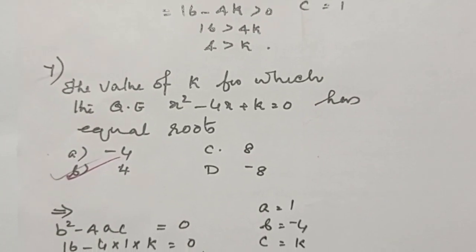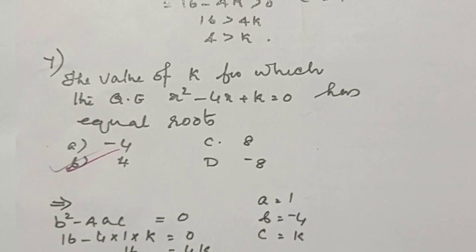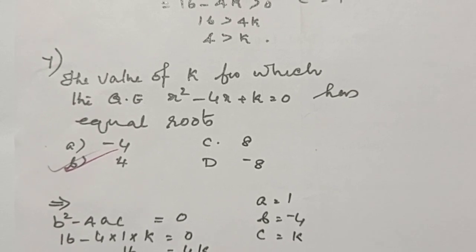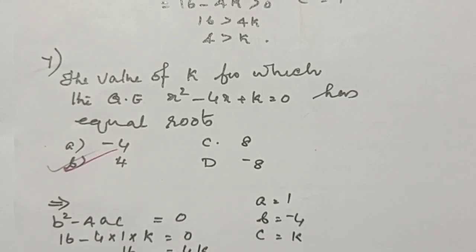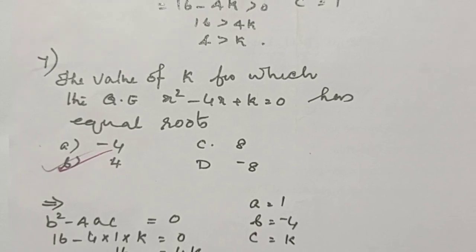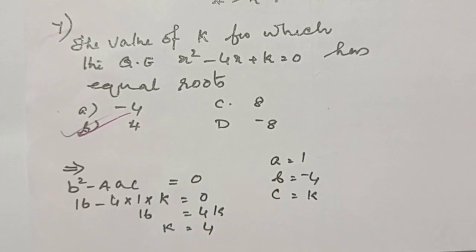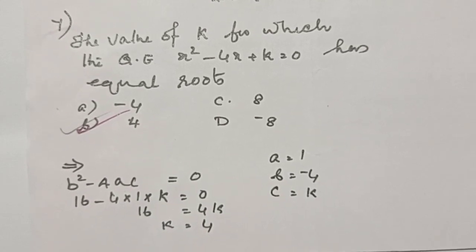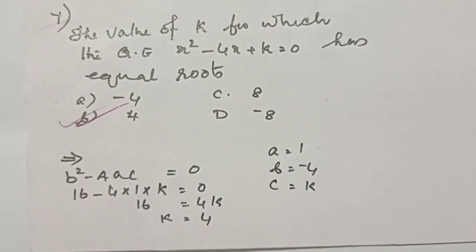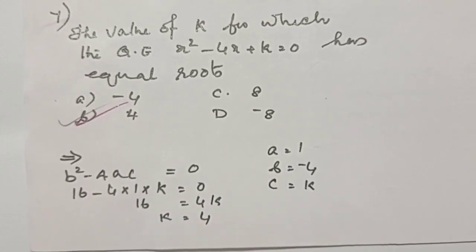Next, the value of k for which the quadratic equation x squared minus 4x plus k equals 0 has equal roots. For equal roots, b squared minus 4ac equals 0. Substituting the values and finding k, k is equal to 4.